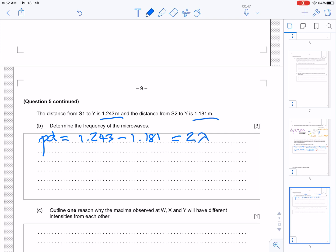The path difference is equal to 2 lambda. Now, this value comes to 0.062 metres, so lambda is going to be 0.062 divided by this 2 here, and that's equal to 0.031 metres. So, there's our answer.